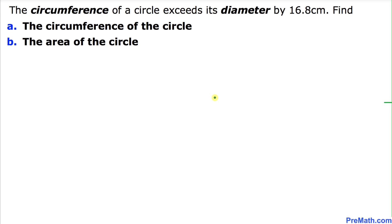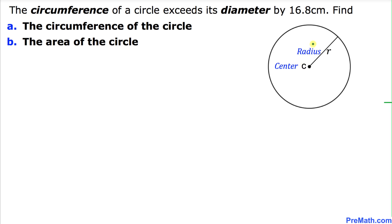Welcome to pre-math. Here's the word problem: The circumference of a circle exceeds its diameter by 16.8 cm. Find the circumference of the circle and also find the area of the circle. Here is our circle.